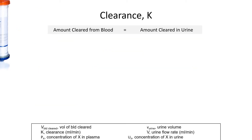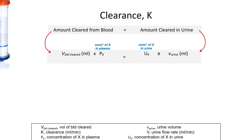And now we perform some mathematical derivations of clearance. Assuming that the amount cleared from the blood is equal to the amount cleared in the urine, by the law of conservation of mass. The amount cleared from the blood is the volume of blood cleared multiplied by the concentration of the substance in plasma. The amount cleared in the urine is the concentration in the urine and the volume of urine.